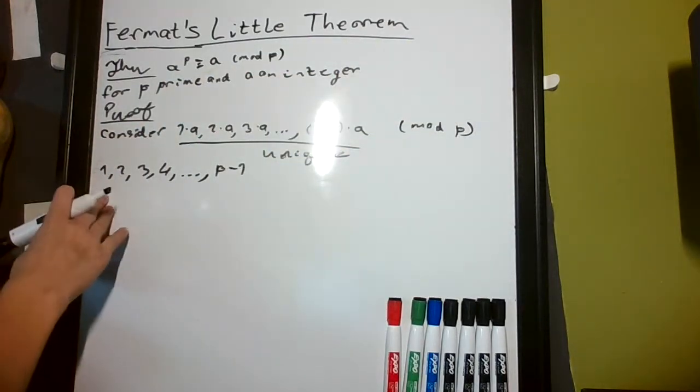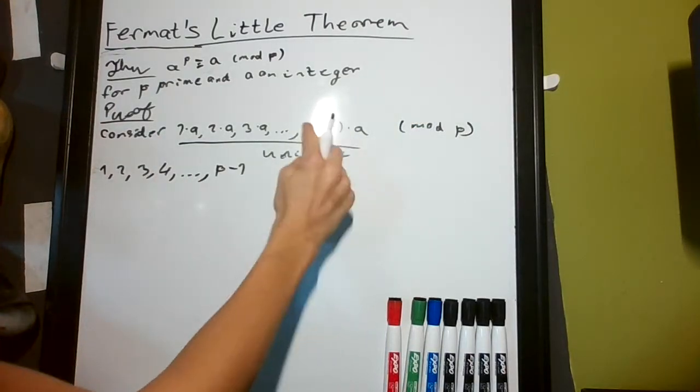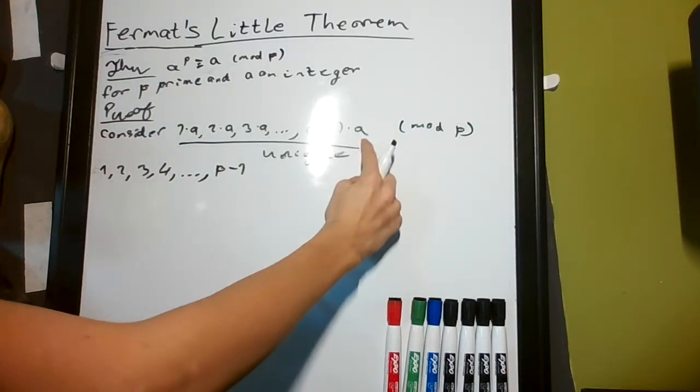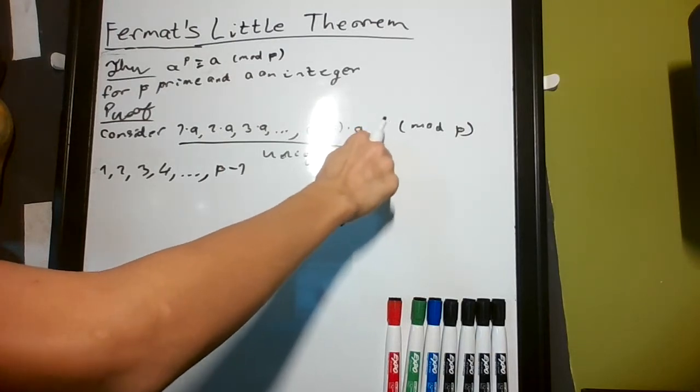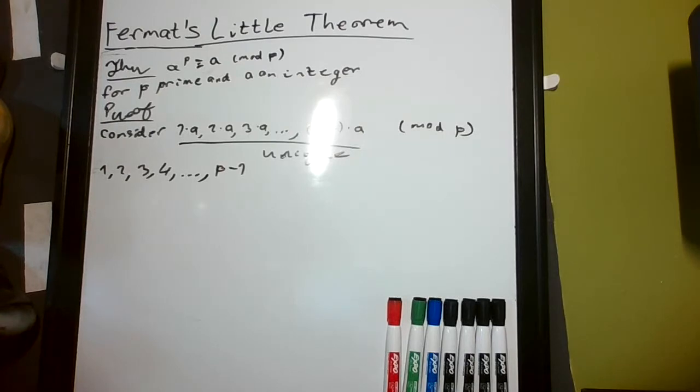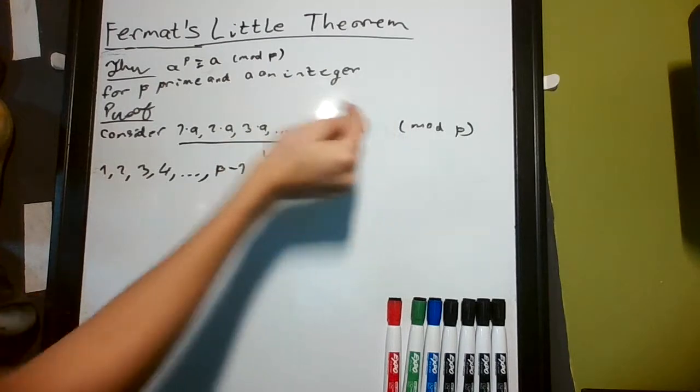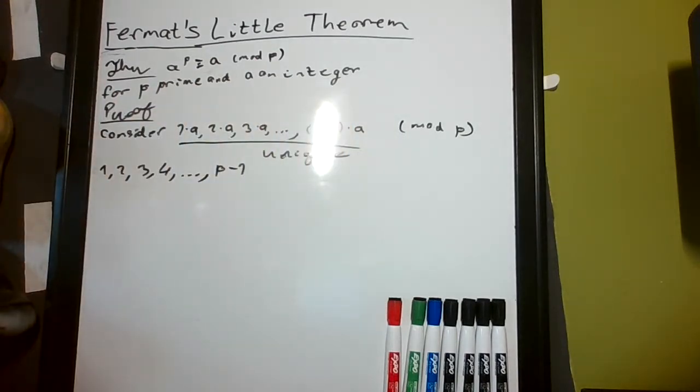We can't have any be 0 because a is not a multiple of p. Since p is prime, any multiple of something that is not a divisor of p won't be divisible by p. The key factor is that p is prime, so each of these are unique and non-zero, because p has no factors besides 1 and itself.